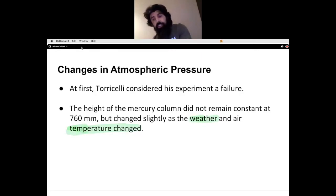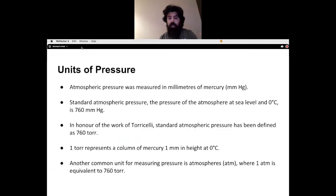Torricelli considered his experiment a failure because the height of the mercury column did not remain constant but changed as weather and air temperature changed itself. So as that changes, so did the level of mercury on that tube.